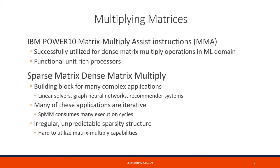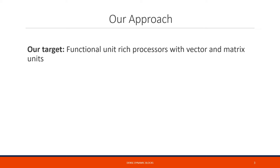However, sparse matrices have irregular and unpredictable sparsity patterns. This irregularity makes it hard to utilize the matrix multiply hardware efficiently. In our work, we propose mechanisms to utilize these new matrix multiply units for SPMM.